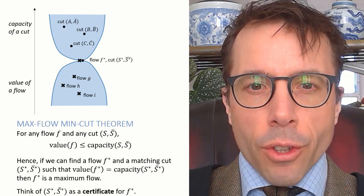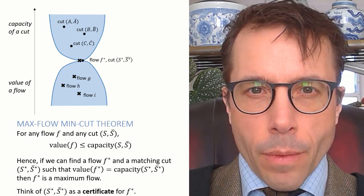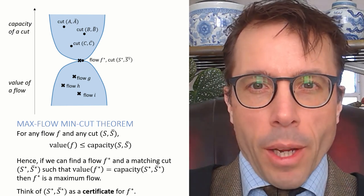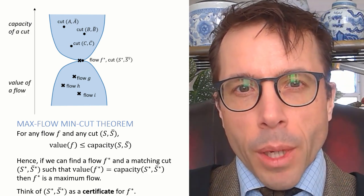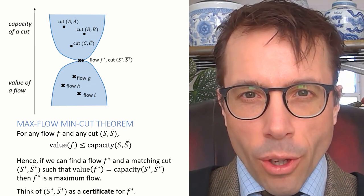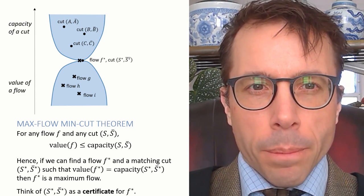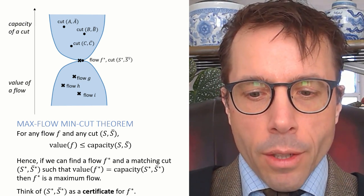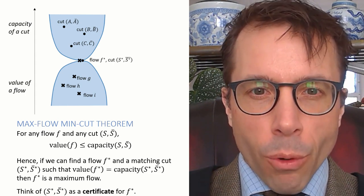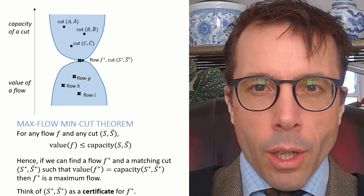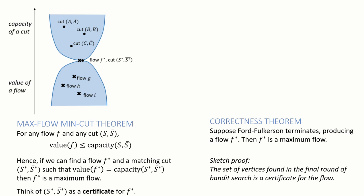I like to think of the cut S-star as a certificate. If I just told someone f-star and claimed it's a maximum flow, they might not believe me. But if I tell someone f-star and I also tell them S-star, then they can verify right away that f-star has to be a maximum. And that is exactly how we are going to prove that the Ford-Fulkerson algorithm is correct. We're going to pull out a cut, namely the set of vertices that the breadth-first search was able to reach, and we're going to say that this cut acts as a certificate that the final flow that the algorithm produces is a maximum flow.